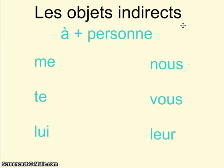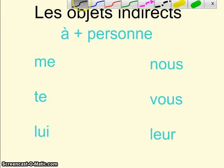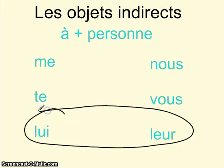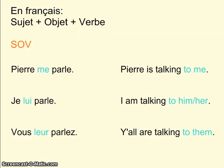Pourquoi est-ce qu'ils sont différents des objets directs? Les objets indirects sont différents parce qu'il y a 'à' plus une personne. Alors, les objets indirects sont les mêmes: me, te, nous et vous. Celles qui sont différentes sont lui et leur. Nous n'avons pas le, la et les pour les objets indirects, mais plutôt lui et leur — him or her, them. Mais l'ordre dans la phrase est le même que pour les objets directs: sujet, objet, verbe — S, O, V.